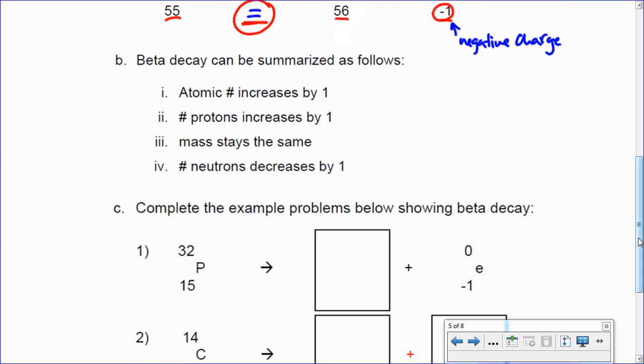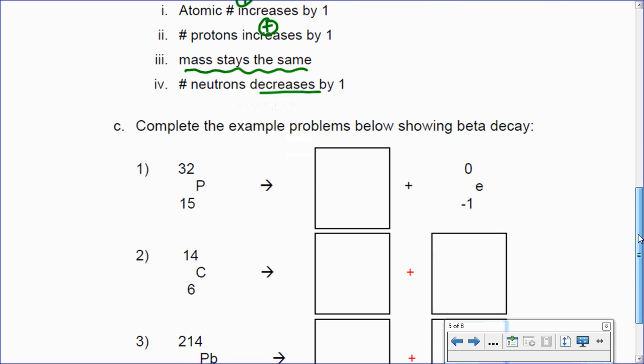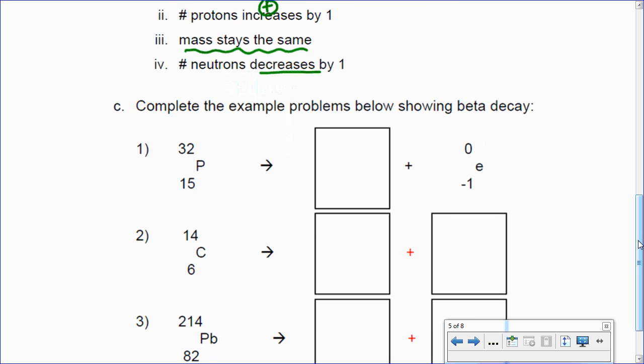So, the atomic number increases by 1 in beta emission. Protons increase by 1 in beta emission. Mass always stays the same. Neutrons decreases by 1 because a neutron has turned into a proton. And the way they've explained that is because it's emitted an electron by doing so. Some weird stuff happens inside the nucleus in that kind of quantum proton neutron soup going in there.